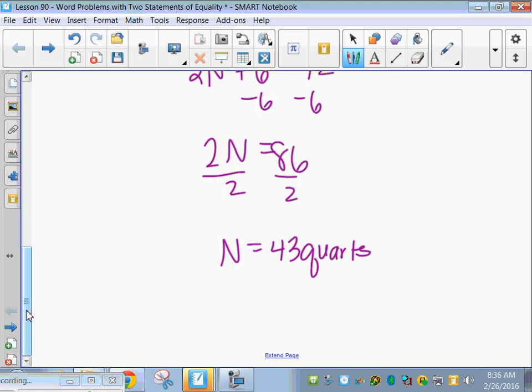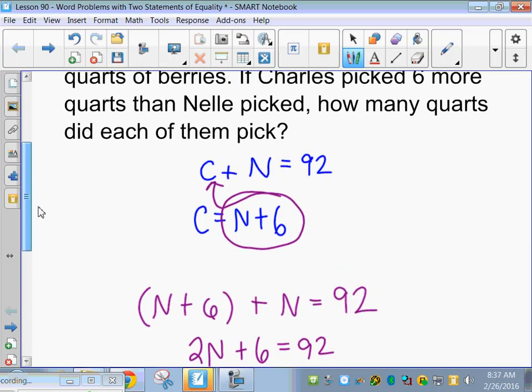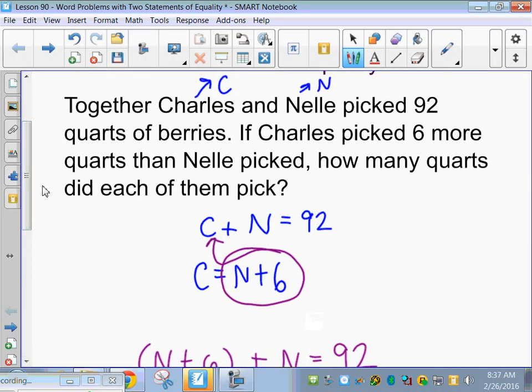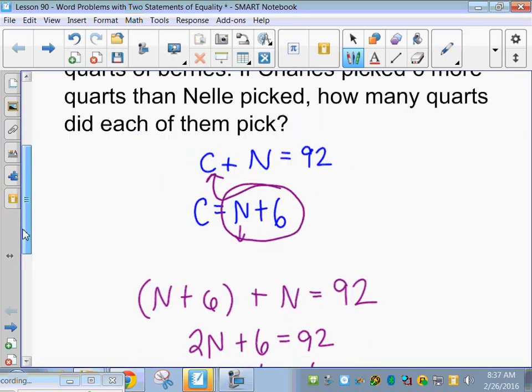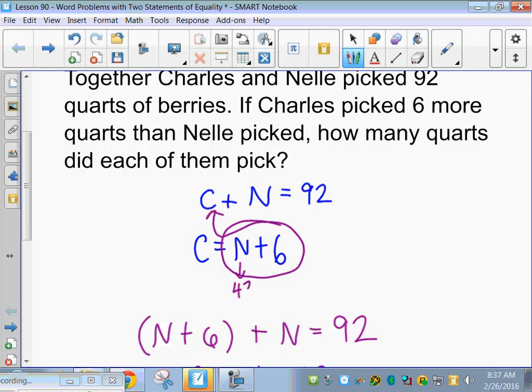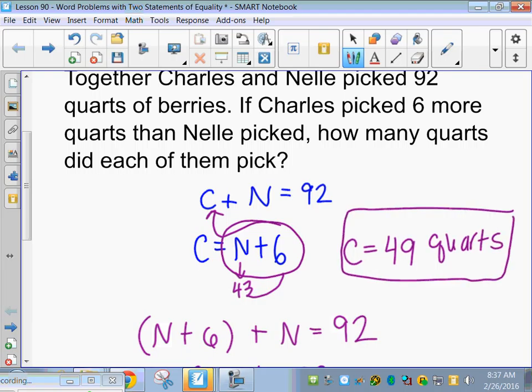And now we need to find how many did Charles pick. What's the best place to plug that in, that first one or the second one? The second one's probably easier. Let's plug in 43 for N and all we have to do is add six. So Charles picked 49 quarts of berries.